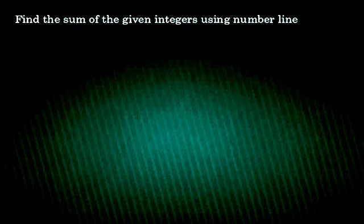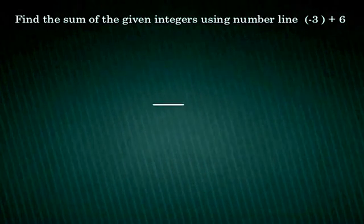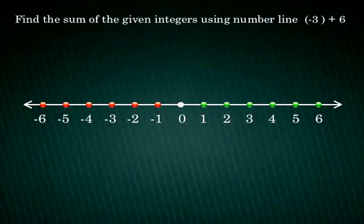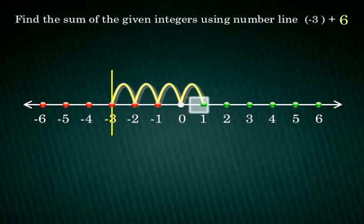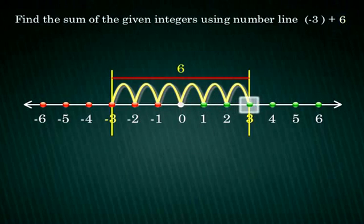Let us understand this concept further with an example. Find the sum of given integers using a number line that is negative 3 plus 6. Draw a number line and mark negative 3 on it. Start from the point negative 3 and move 6 units towards the right as the second number is positive. The number that we have reached is positive 3. Therefore, negative 3 plus 6 is equal to 3.